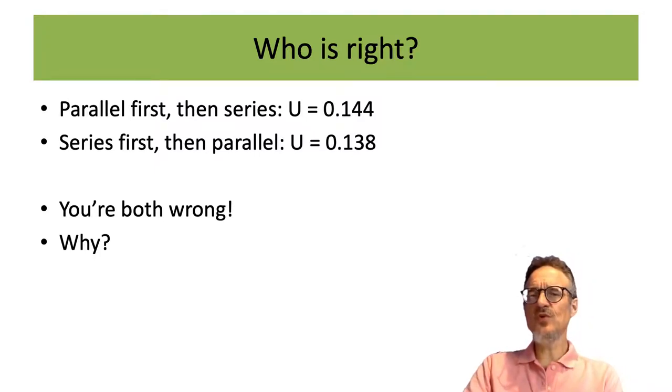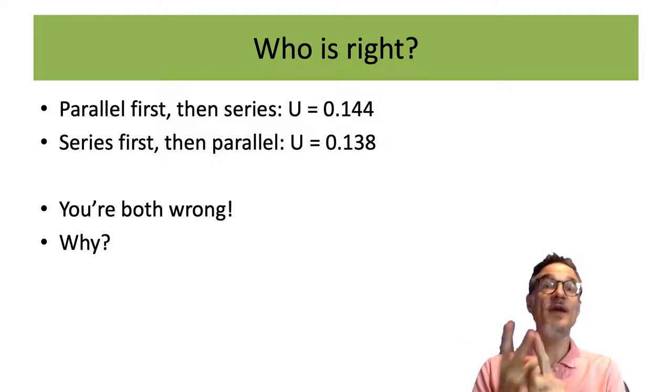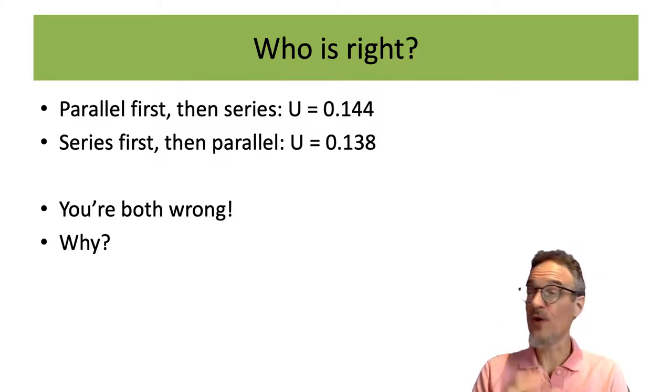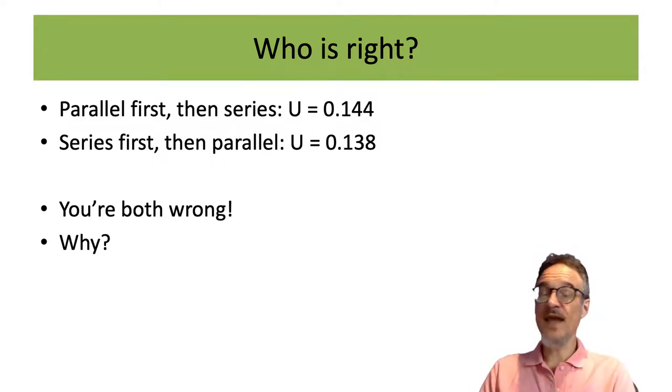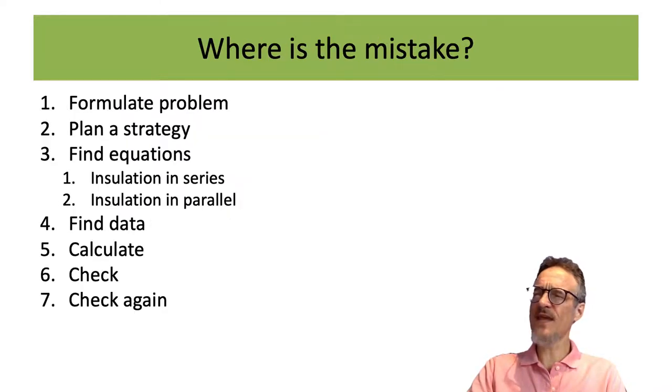So if you do a calculation twice and you get a different answer, then that could mean one of three things. It could mean that one of the calculations is wrong. It could mean the other calculation is wrong. Or it could mean that both calculations are wrong. So in this case, I think both of the answers are wrong. And we need to find out where the mistake is.